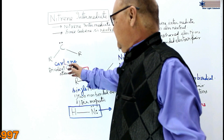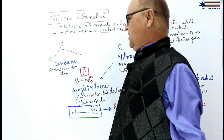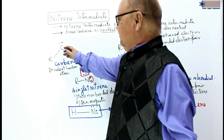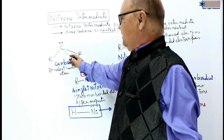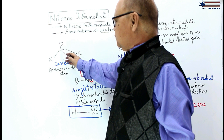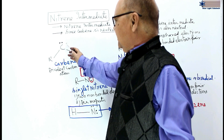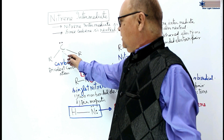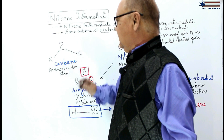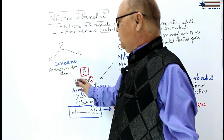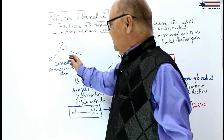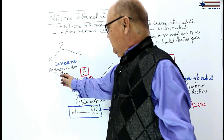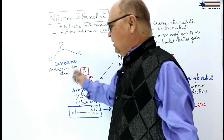In carbene intermediate, the carbon has two unshared electrons. With four electrons in its outermost orbit, two electrons are shared forming two C-R covalent bonds. Therefore, the covalency of carbon in carbene intermediate is two, and in carbene there is a divalent carbon.